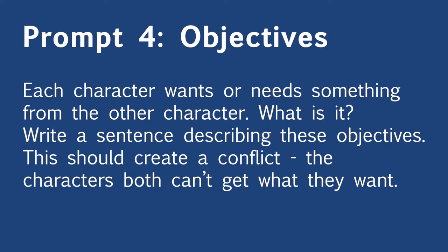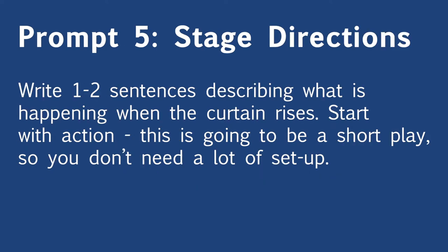If you're writing with other writers, now you should pass the paper again. When you get the next paper, read everything from the beginning and add on to that play. Your next prompt is to write the opening stage directions for your play — remember, stage directions go in parentheses. Write one to two sentences describing what's happening on stage when the lights go up. Start with the action: characters on stage or making an entrance, something happening.